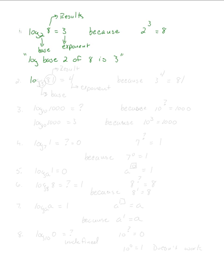Let's try log base 3 of 81 equals 4. The 3 is the base, the 4 is the exponent, and the 81 is the result. So converting into exponential notation: the base is 3, the exponent is 4, and 3 to the 4th is 81.